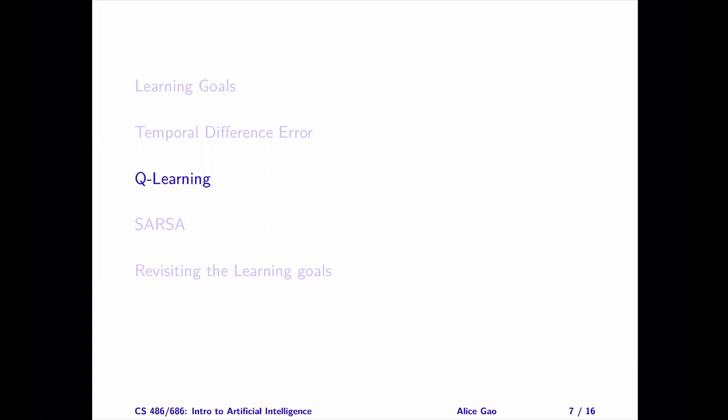That's everything on the passive and active Q learning algorithms. Let me summarize. After watching this video, you should be able to describe the Q learning update rule, trace and implement the passive Q learning algorithm, trace and implement the active Q learning algorithm, and explain how Q learning does not care about the policy that the agent is following. Thank you very much for watching. I will see you in the next video. Bye for now.